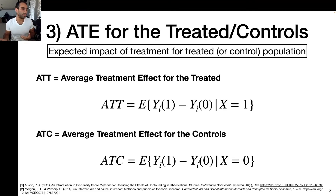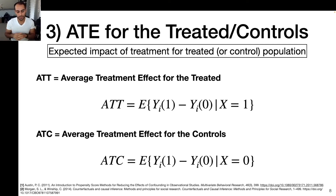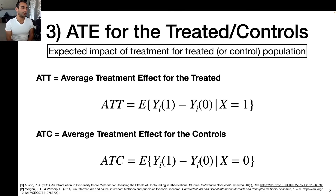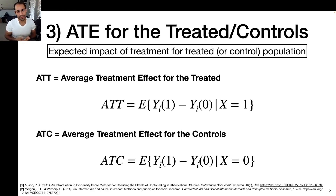Conversely, for the average treatment effect for the controls, you do a very similar study but instead of starting with private school students, you take a population of public school students. Generally, these average treatment effects will be different for the two different populations. So if your kid already goes to private school, you're probably more interested in the ATT than the overall average treatment effect.